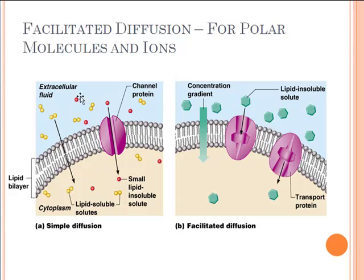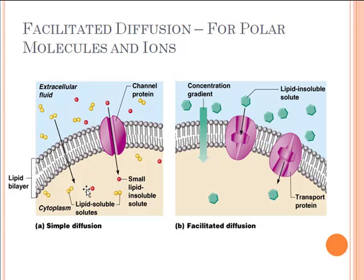Facilitated diffusion is still movement from high to low. As you can see in our example, there are more glucose molecules on the outside than the inside — high to low, down the concentration gradient — but they're using a specific doorway: a carrier protein or transport protein. Polar molecules like glucose and ions like hydrogen, sodium, or potassium have a hard time crossing membranes, so they have to use a doorway. A nonpolar substance like CO2, being lipid-soluble, can diffuse right through with no problem.